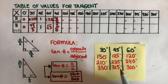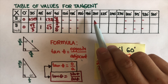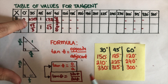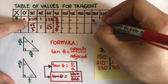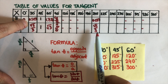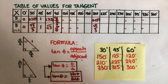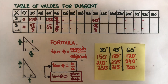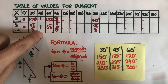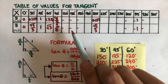We already have the reference angles, and remember all the rest will have the same value. Now I want you to figure out the rest. Let's jump to 210 — it is the same as 30, so 210 should be 0.577 and square root of three over three. Then for 315: it is the same as 45, so I put negative one for the rounded and exact values.